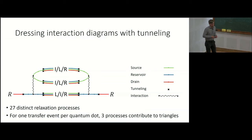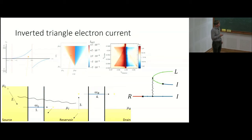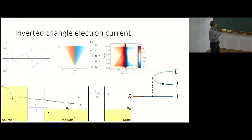The first process is essentially identical in structure to the first process shown before. The second process is the following: the electron interacts in the source lead before tunneling into the intermediate region and creates an electron-hole pair also in the intermediate region — this corresponds to the process suggested by the ETH group. Calculating the contribution of this diagram, it contributes exactly in the upper inverted triangle that was first so surprising in the experiment. Because the charge carriers are excited from the Fermi energy, the contribution increases towards the Fermi energy.